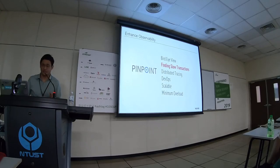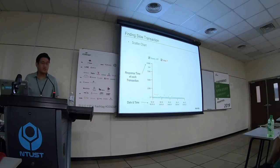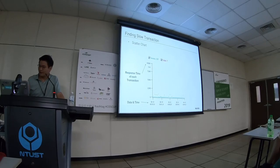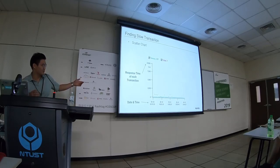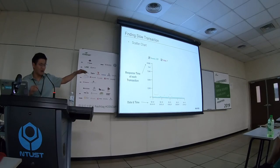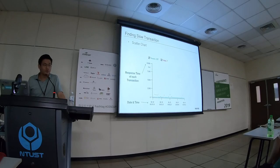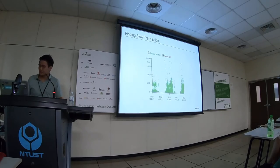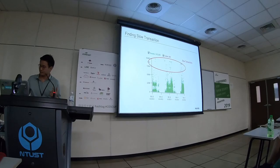The second feature is about finding slow transactions. How do you find your slow transactions in your service? In Naver, with Pinpoint, you can find problematic transactions in no time. This is a whole scatter chart. Each dot on the chart represents a transaction. Red dots are transactions with exceptions or failures. The Y-axis is the response time of each transaction, and the X-axis represents date and time. Dots on the top of the chart are the slow transactions.